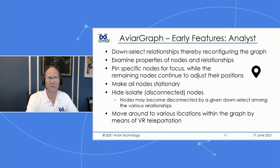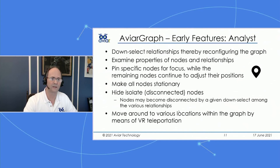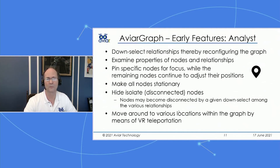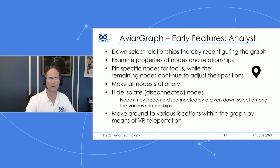The demonstration enables users to down-select among different relationship types — for example in the movie graph you have producer, actor, writer, and directed relationships. You can down-select and hide certain relationships, and the graph rearranges. You can also click on nodes and highlight properties of nodes and relationships, click on a particular node and pin it in space so it doesn't move, make all nodes stationary, hide disconnected nodes, and teleport yourself around in the virtual reality space to examine the graph array from different angles.